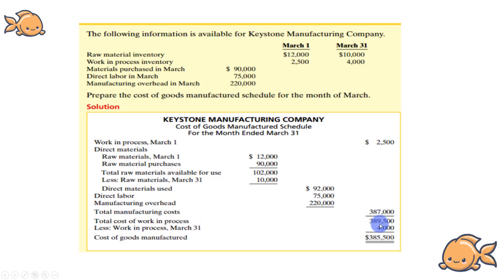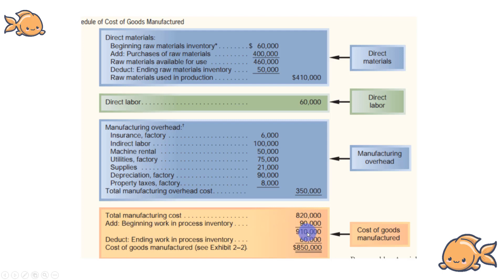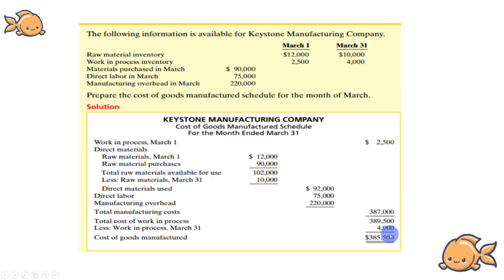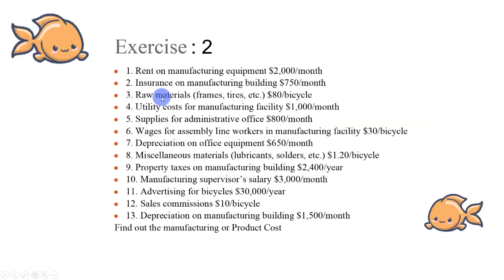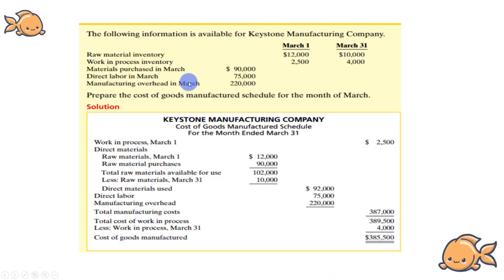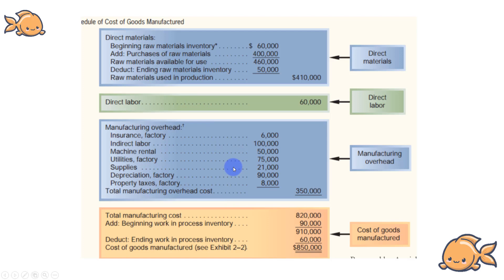It is a systematic process. We look at the ending Work in Process. The Cost of Goods Manufactured is ultimately the final return value — the total value of cost of goods manufactured for the period.